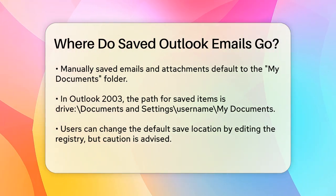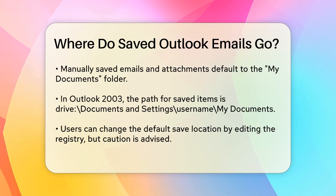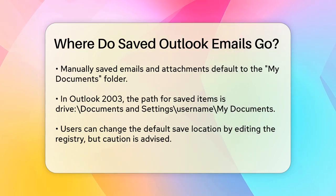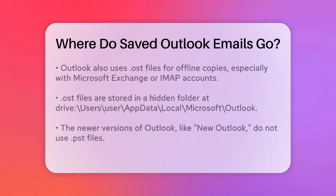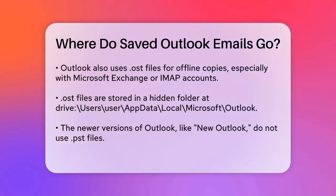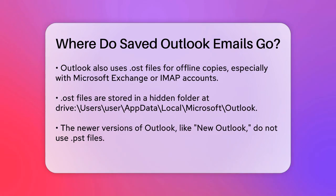In addition to .pst files, Outlook also uses .ost files for offline copies of your email accounts, especially if you're using Microsoft Exchange or IMAP. These .ost files are stored in a hidden folder, typically at Drive\Users\User\AppData\Local\Microsoft\Outlook.